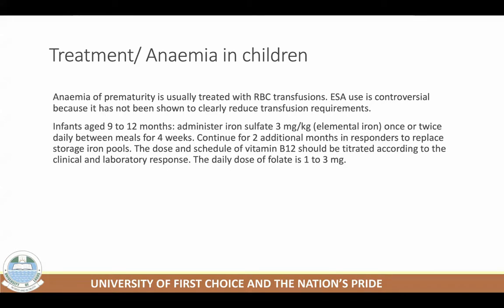In children, anemia of prematurity is usually treated with RBC transfusions. Using Epoetin alpha is controversial because it's not been shown to clearly reduce transfusion requirements in children. For infants from 9 to 12 months, administer iron sulfate 3 milligrams per kg once or twice daily between meals for four weeks, then continue for an additional two months in responders to replace storage iron pools. Dose and schedule of B12 should be titrated according to clinical need; similarly for folic acid, 1 to 3 milligrams is usually sufficient for children.